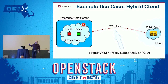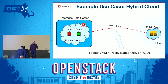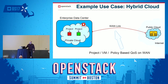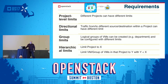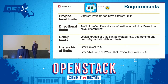I decided to go with the use case of a hybrid cloud — I think it's the simplest to understand. On the left side, just an enterprise data center, some private cloud, OpenStack of course, two projects. There is a WAN link connecting that to a public cloud, an extension in a public cloud. This is the shared resource that we want to create our traffic control on. What are the requirements? We want to be able to have a project-level limit. Project means tenant — it's a Keystone project. Different projects have different limitations.